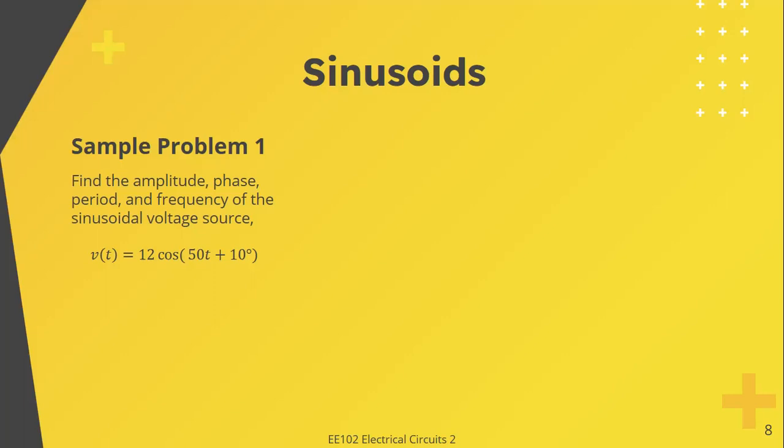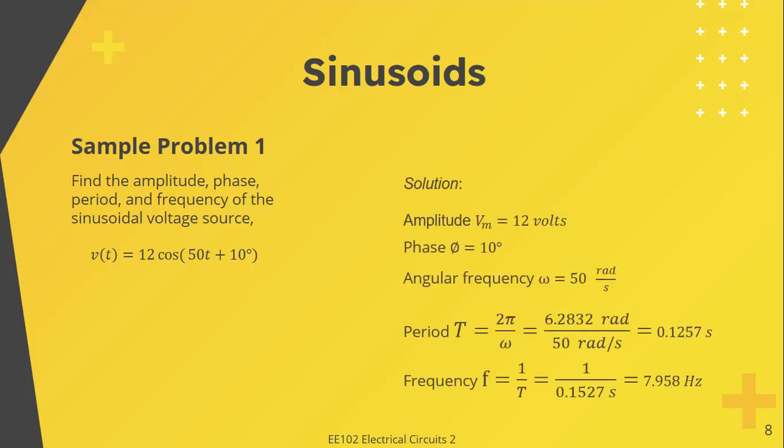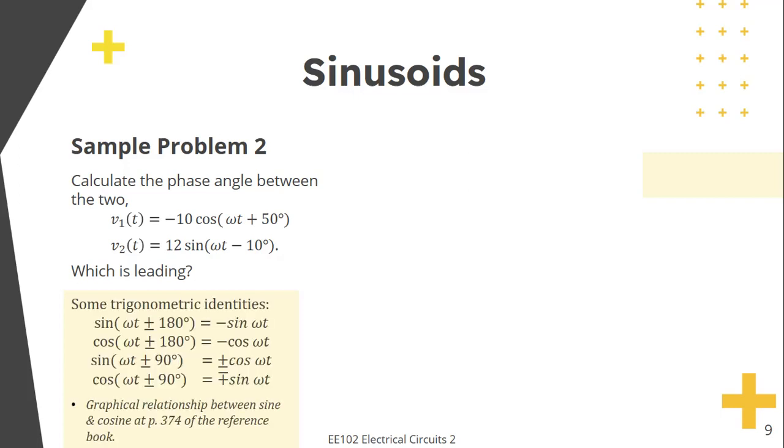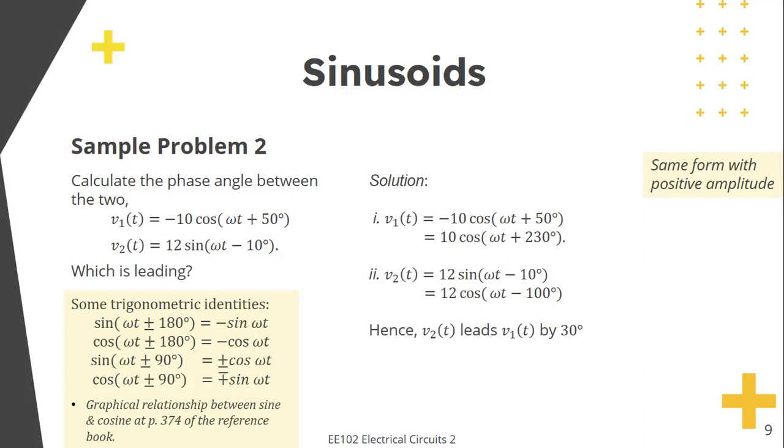For example, find the amplitude, phase, period, and frequency of this sinusoid. So the amplitude is -10, the phase is 50°. The angular frequency is omega equals 4π radians per second. And we know that the period is 2π over omega. So the period will be 0.5 seconds. And frequency is just the reciprocal of our period, so we get 2 hertz.